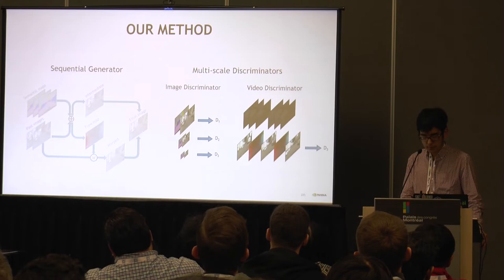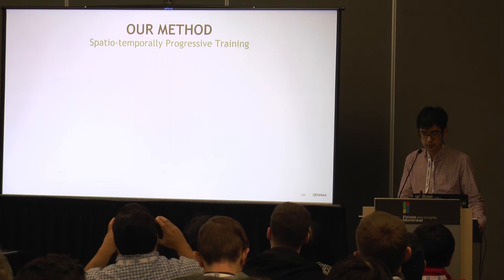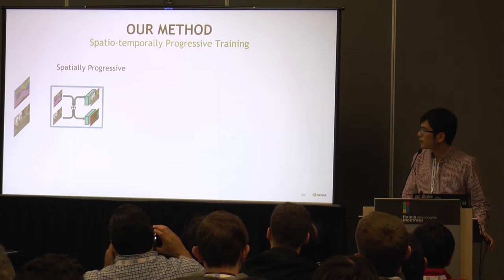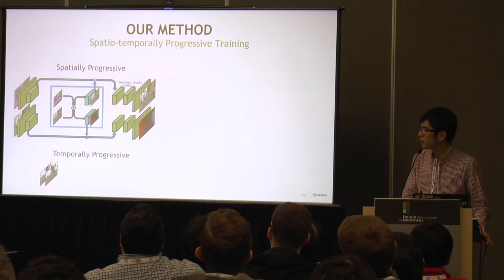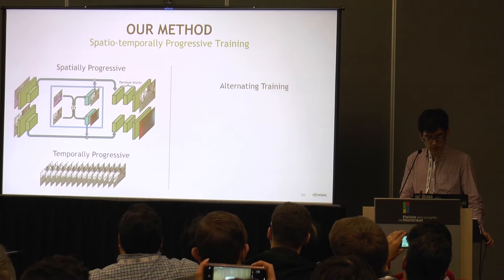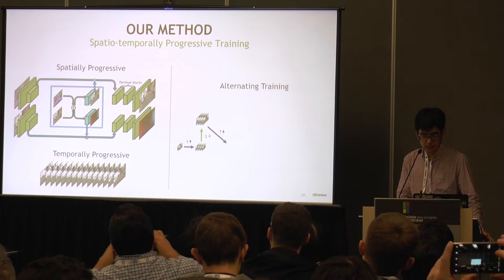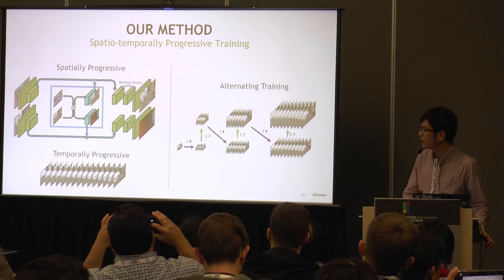Finally, we have a special temporally progressive training schedule. We start from low resolution and then increase the resolution by combining the features from low-resolution training. Similarly, we start from only a few frames and gradually increase the number of training frames. These two steps alternate, forming a progressive training schedule that allows us to generate high resolution and long-duration videos in the end.